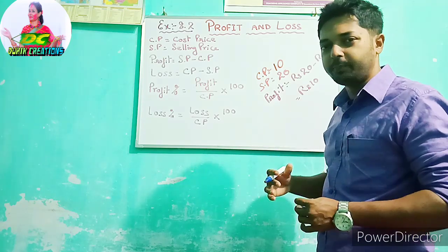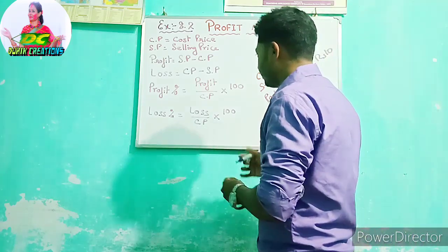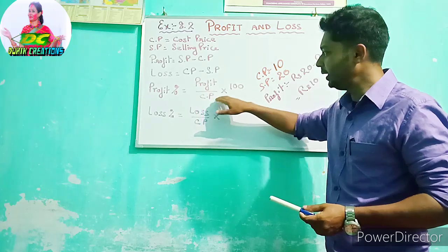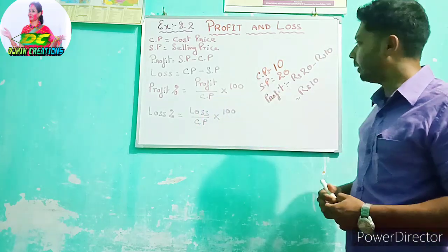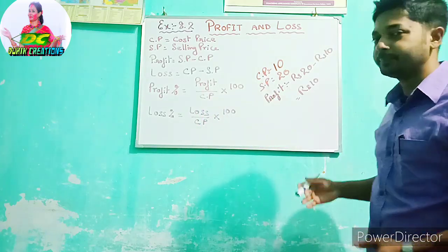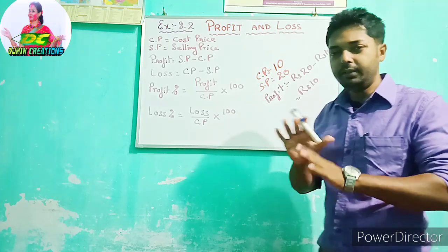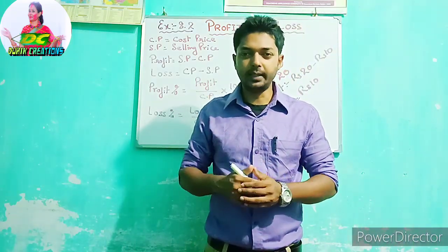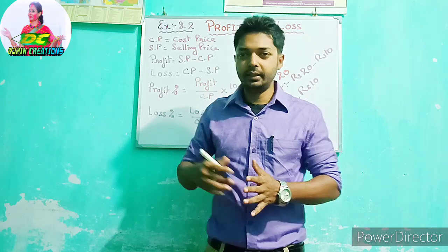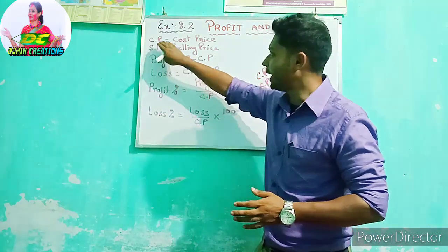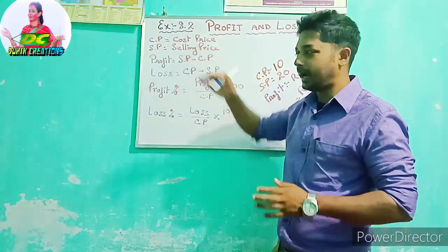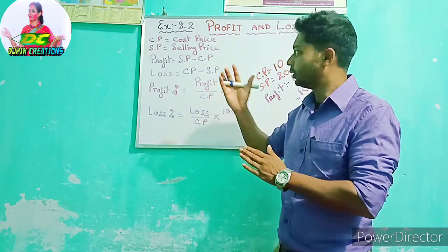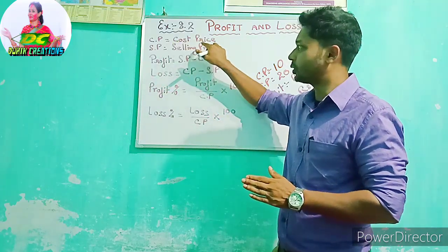So how do we calculate the profit percent? Profit percent is calculated by the formula: Profit divided by CP, multiplied by 100. CP stands for cost price — I bought this pen for Rs. 10, so Rs. 10 is the CP.